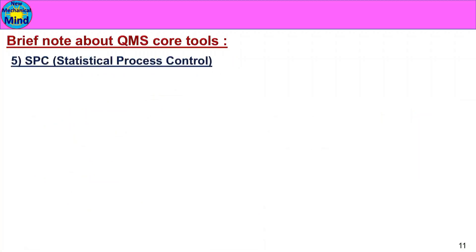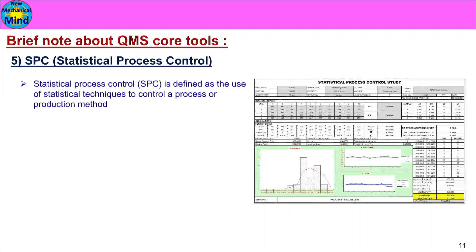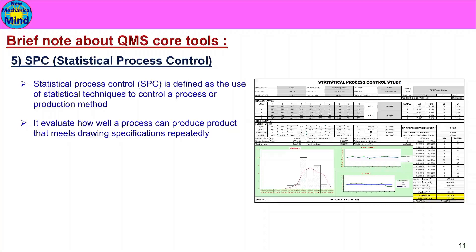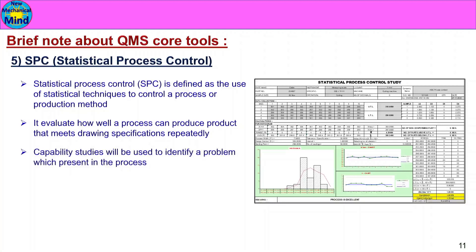Next, SPC — Statistical Process Control. SPC is defined as the use of statistical techniques to control a process or production method. If a particular parameter is not capable, we can confirm the production process and continue to monitor it proactively. SPC evaluates how well a process can produce a product that meets drawing specifications repeatedly. Capability studies are used to identify problems present in the process.